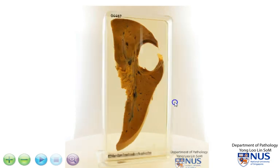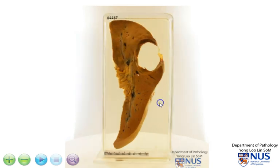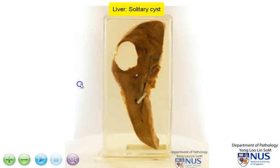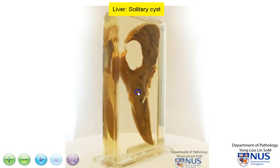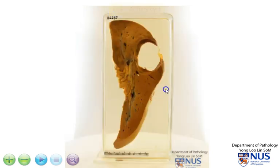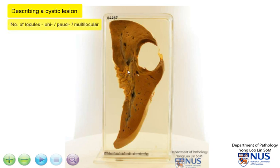Here is a slice of the liver, and we're looking at a focal or discrete lesion, which is a cyst. You can see that this cyst is very close to the liver capsule, and how we describe this cyst really depends on the number of locules. This is a unilocular cyst.